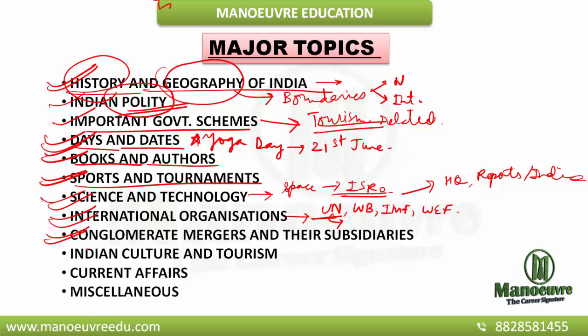Next comes conglomerate mergers and their subsidiaries. These will be extremely current-affairs oriented. When I talk about mergers, I mean something like recently Vodafone and Idea were merged together. These kinds of news you need to keep in mind when it comes to conglomerate mergers and their subsidiaries.